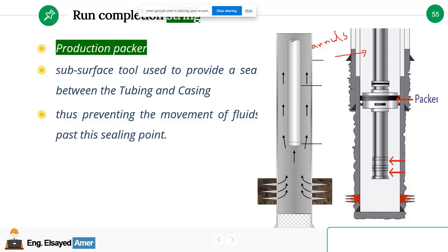We can fill it with a completion fluid. The completion fluid will contain a preserved fluid. Preserved fluid means clear fluid. Fluid contains diesel, contains a corrosion inhibitor, contains special chemicals which will be used to prevent any corrosion for the metal of the casing and the tubing.